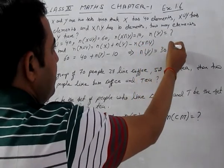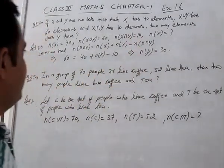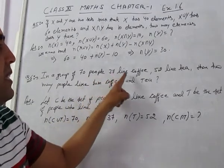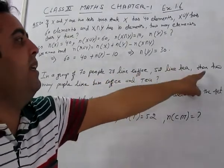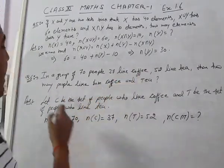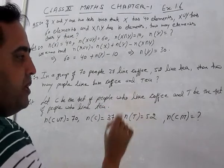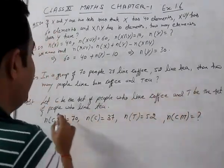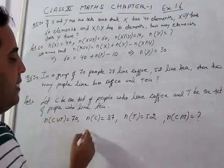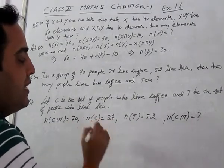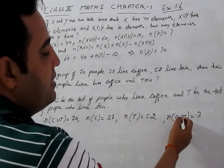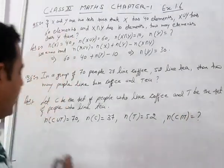Question number 6. In a group of 70 people, 37 like coffee and 52 like tea. How many people like both coffee and tea? Let C be the set of people who like coffee and T be the set of people who like tea. Then n(C∪T) = 70, n(C) = 37, n(T) = 52. Find n(C∩T).